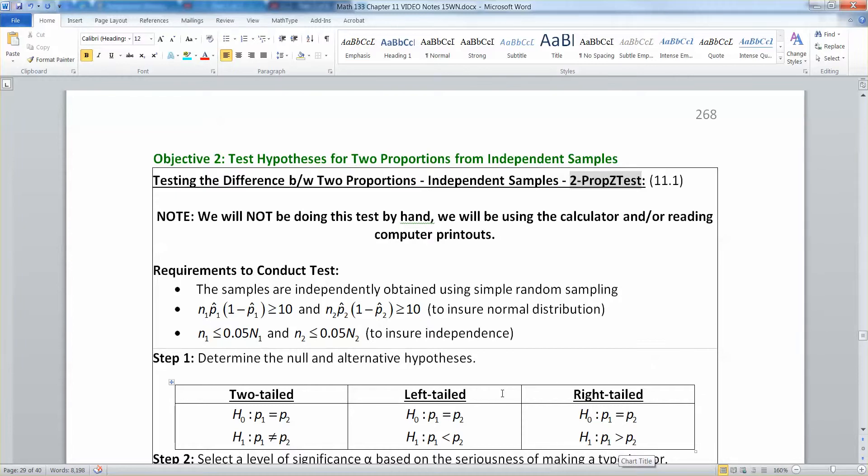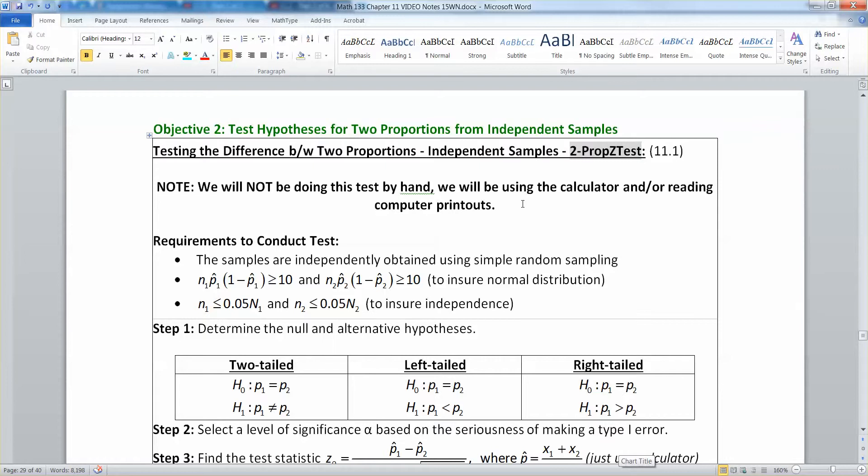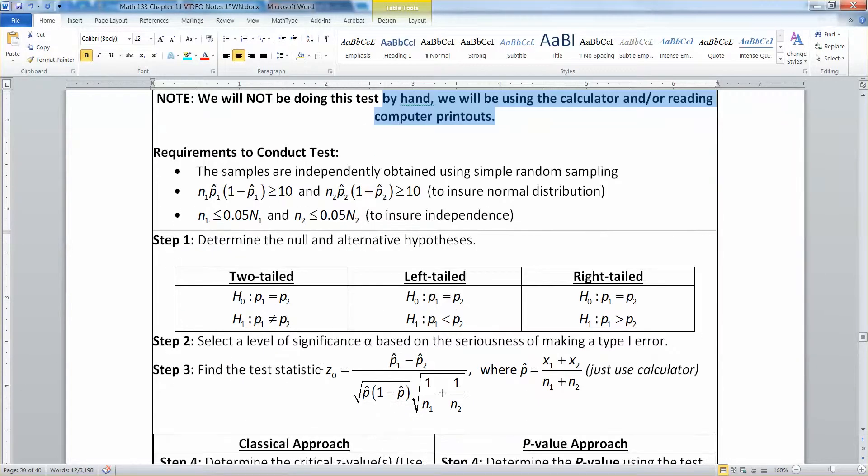Just a side note here, we're not going to be doing this test by hand, we'll be using the calculator and or reading computer outputs to do it. In particular, step three right here is really just tedious. It's not super hard to find, but it's kind of tedious and annoying to find by hand, so we'll just make the computer or calculator do it for us.